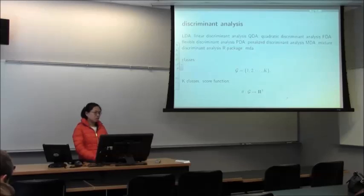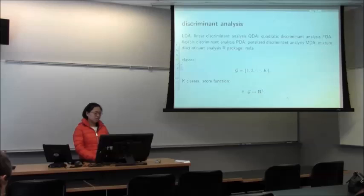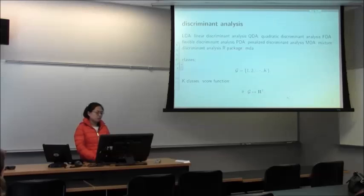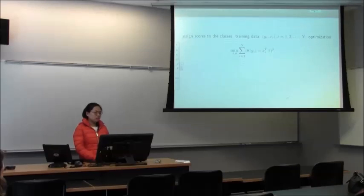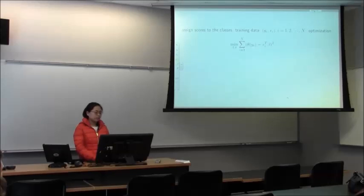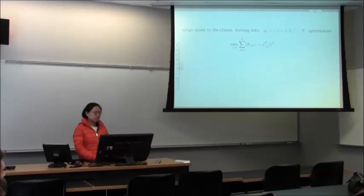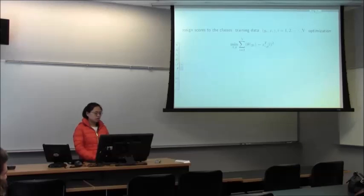For the classification problem with discriminant analysis, there are K classes from 1 to K. The score function is a mapping from the classes to a score that evaluates how likely a point belongs to each class. Given the score function, the optimization problem minimizes the score minus x-i^T beta. This assumes the score takes the form x-i^T beta, making it a linear discriminant analysis.